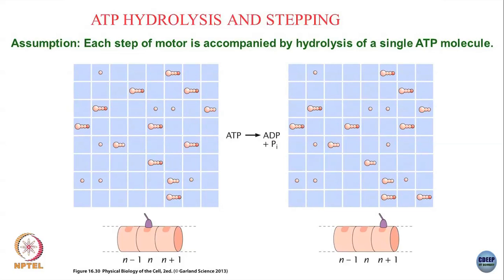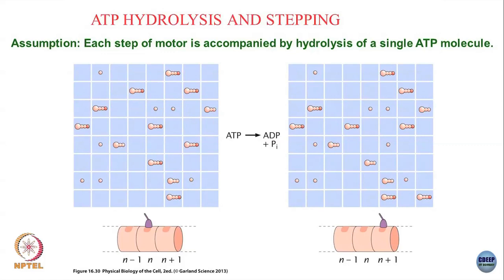Here is my motor sitting on the nth lattice site. In solution there are ATPs, ADPs, and phosphate ions floating around. I go back to this lattice gas model and say that when the reaction ATP goes to ADP plus phosphate happens, that is when the motor takes a step from N to N plus 1.